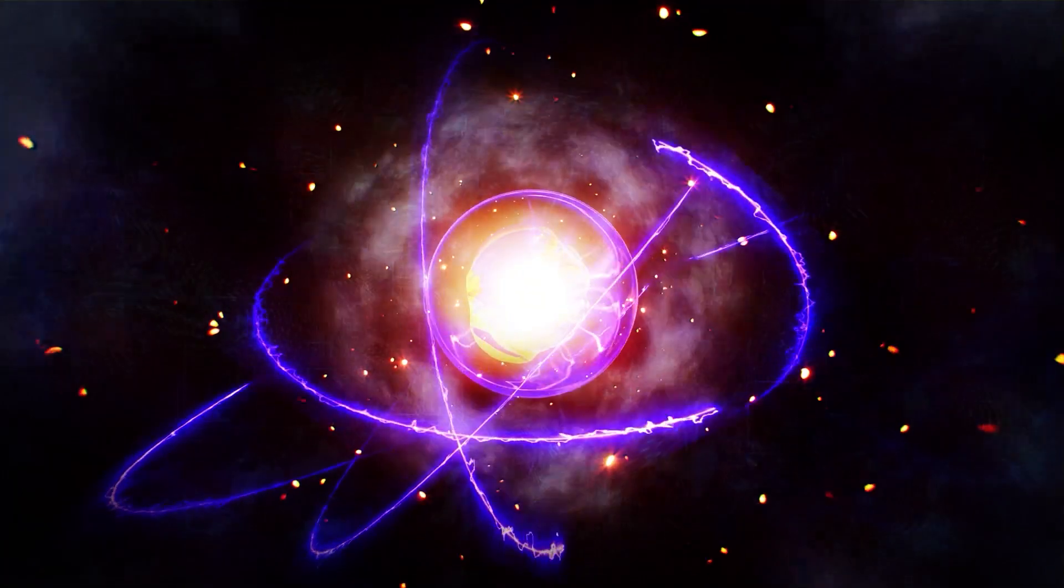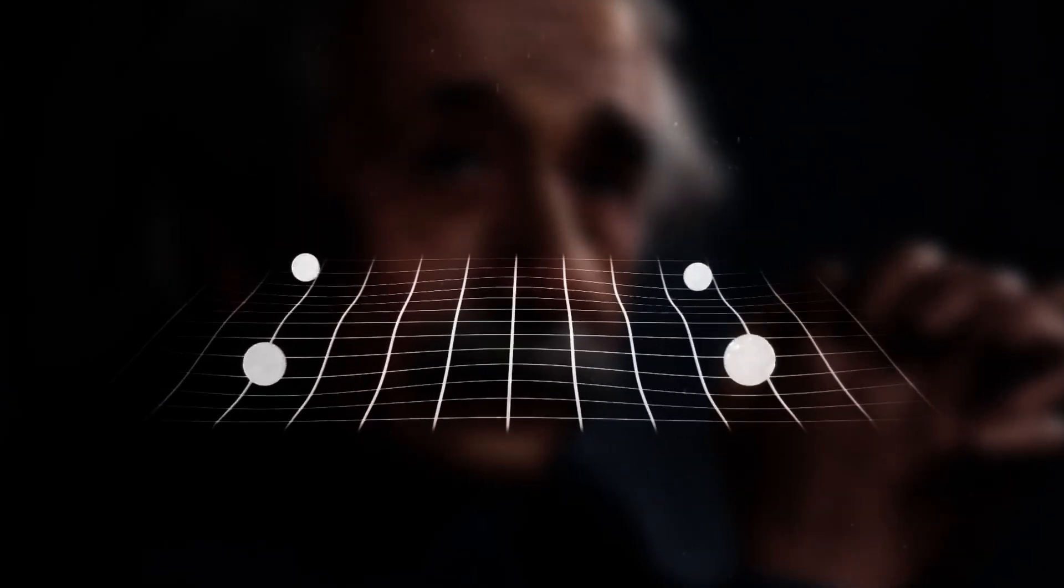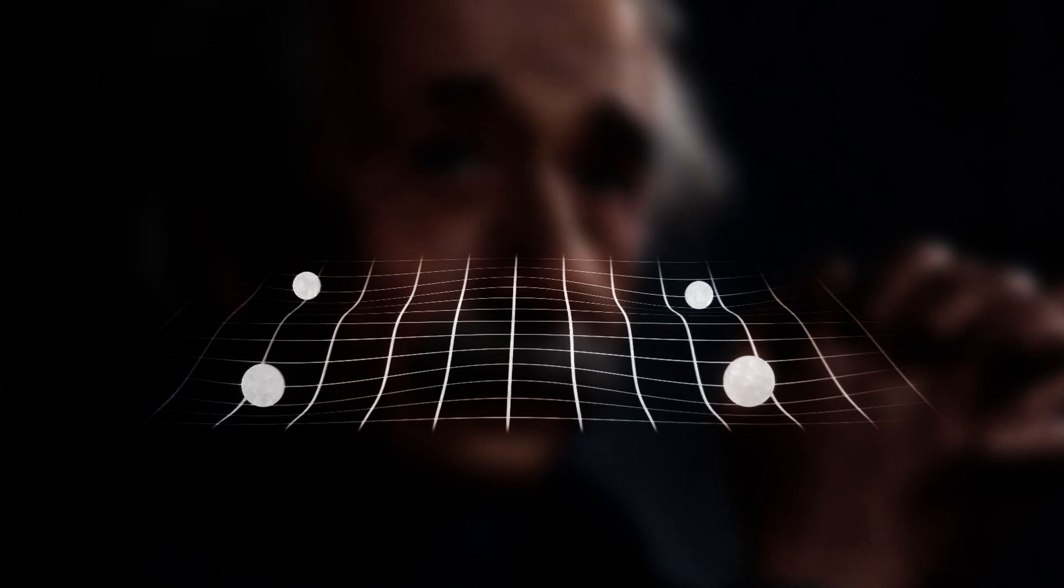Basically, these equations explain how matter and energy affect the way space-time moves. Albert Einstein said that to understand it, you need to think of a big mesh. When objects are placed on this mesh, it deforms due to the weight of the objects.